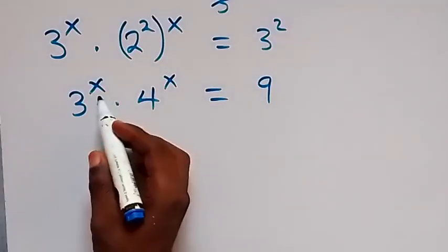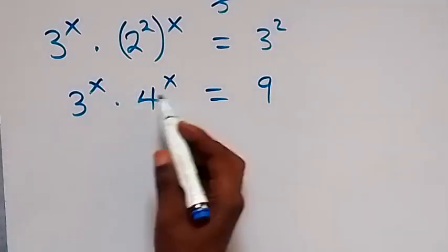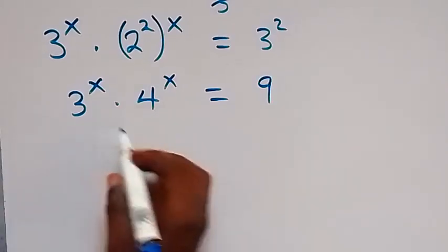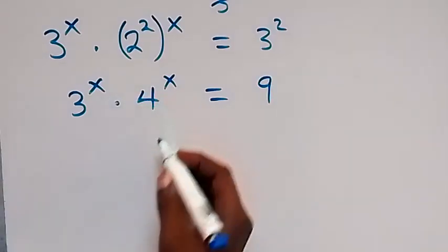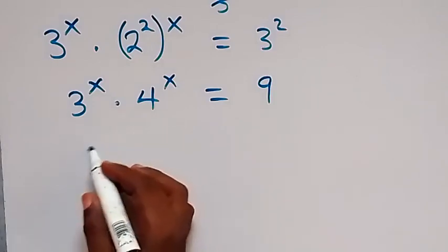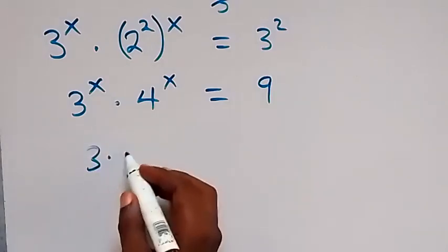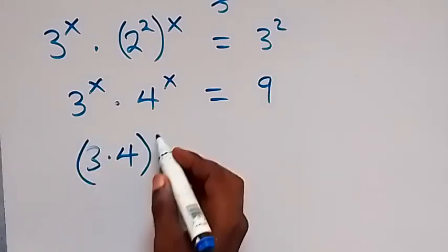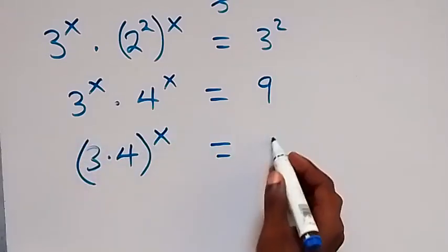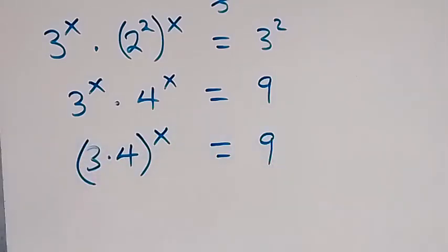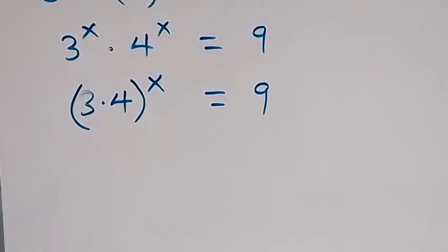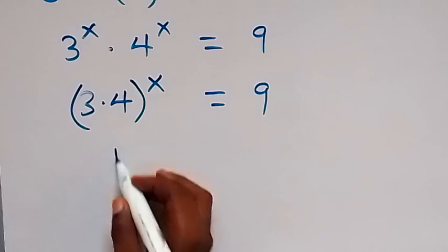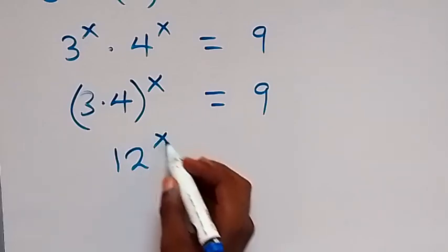Since the powers are the same, we can write these numbers together raised to power x. So we have 3 times 4, raised to power x, equals 9. This gives us 12 raised to power x equals 9.